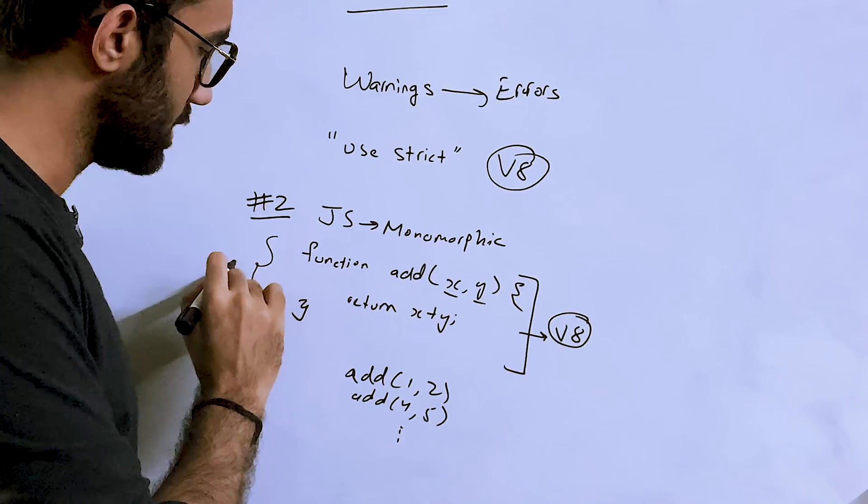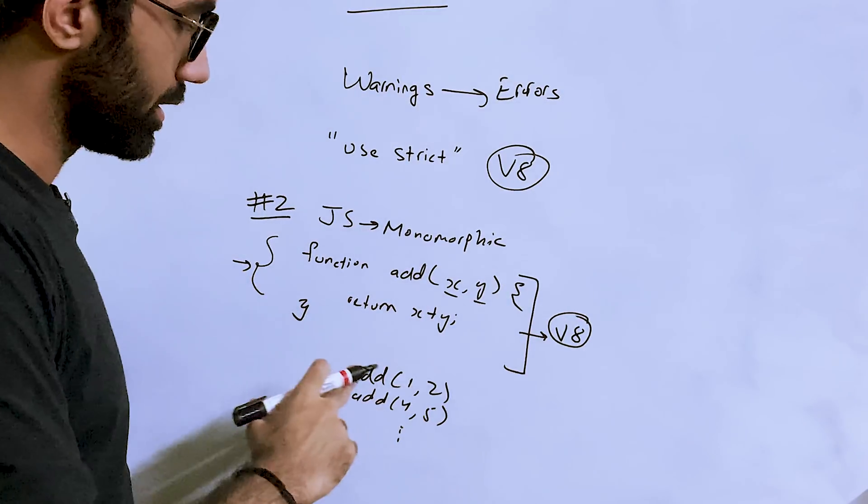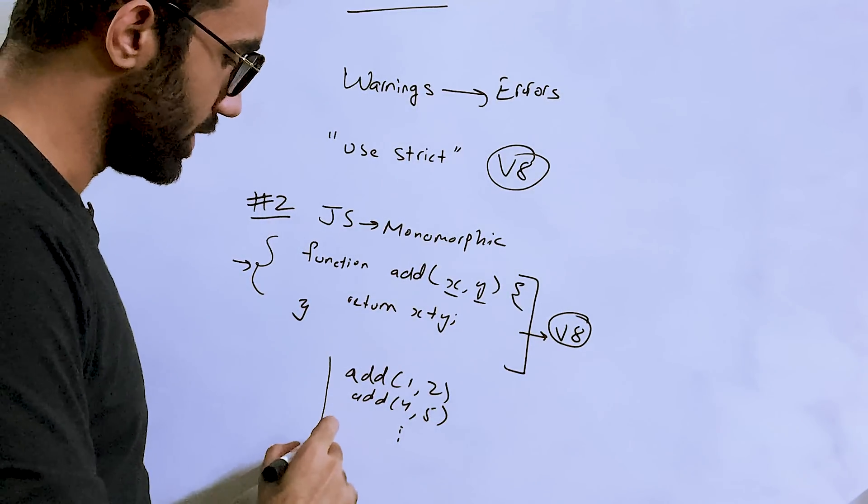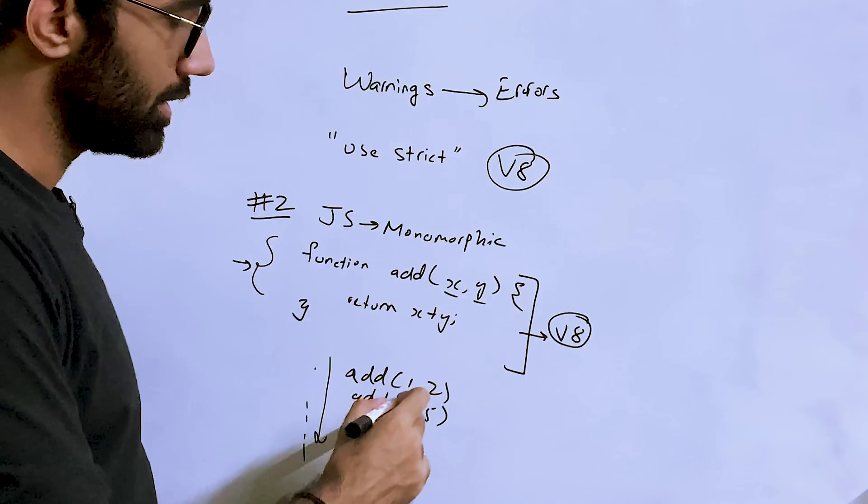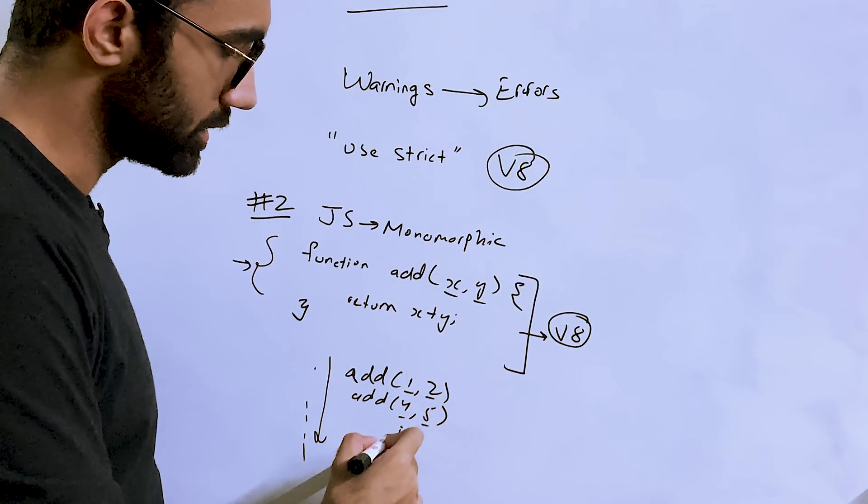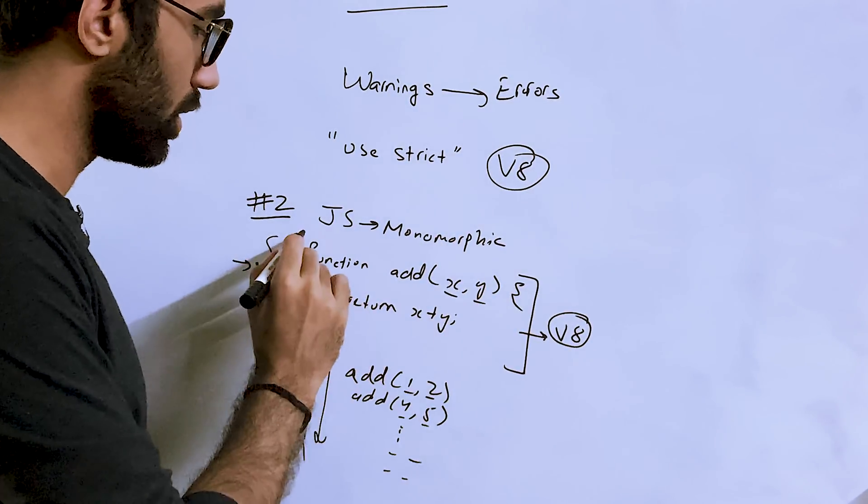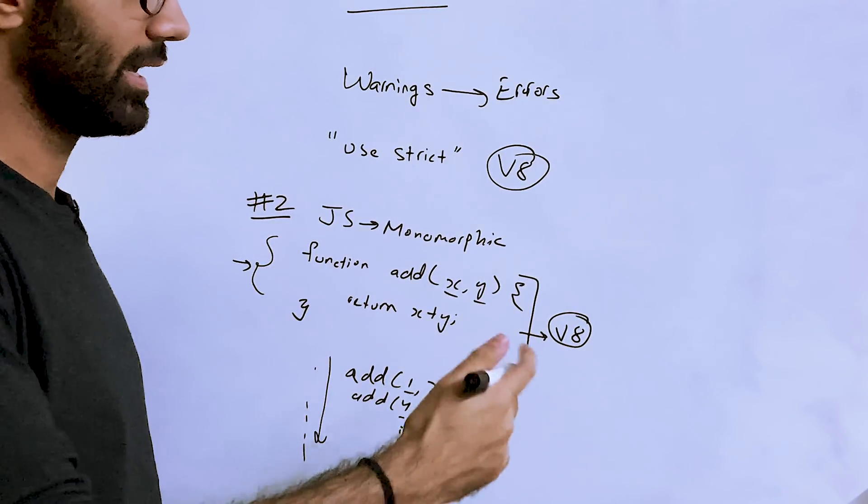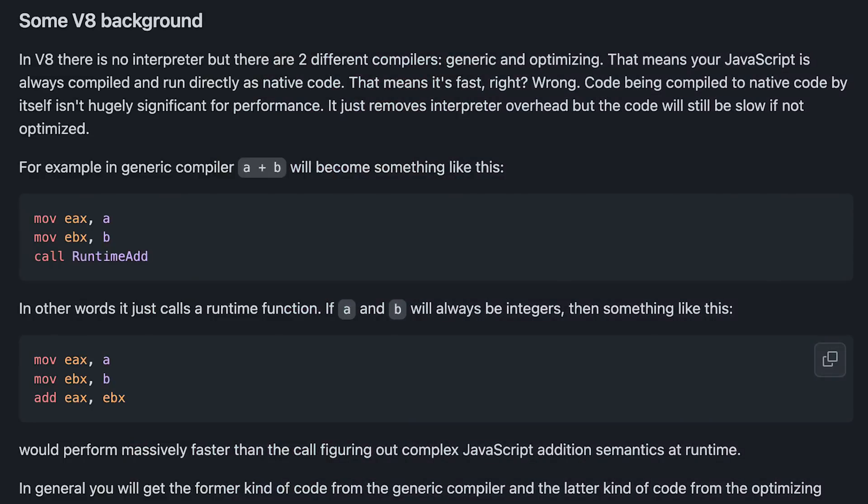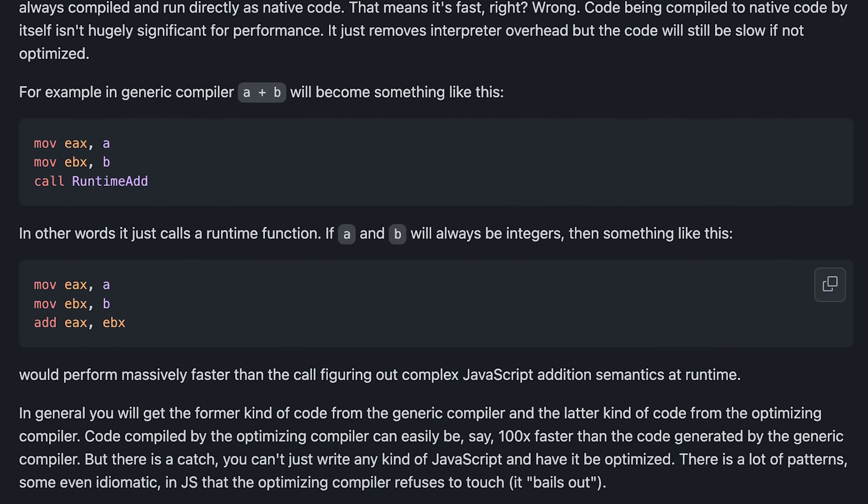But after optimizing it, V8 could actually see that because you are using only numbers with this function, I'm just going to optimize this in a way where I don't have to call this in a JavaScript way. I can just directly call it in the machine code, which is x86 or whatever, eax and ebx, the registers. You can actually see this example which is documented in some V8 repo as well.